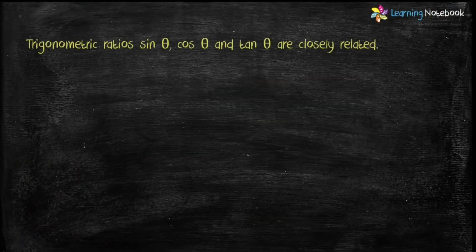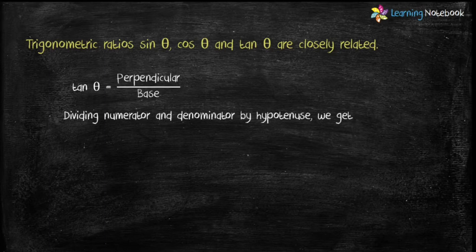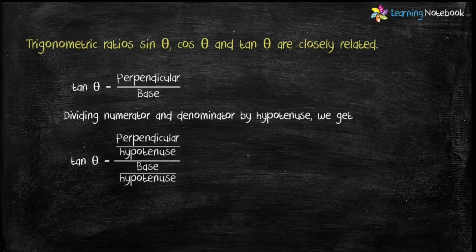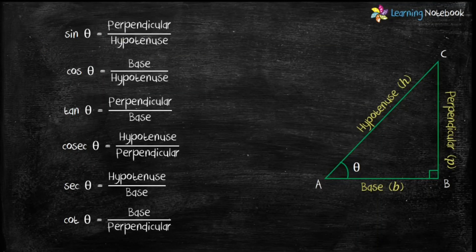Sin theta, cos theta, and tan theta are closely related. If we know any one of them, we can easily find the other two ratios. Tan theta equals perpendicular upon base. Dividing numerator and denominator by hypotenuse, we get tan theta equals perpendicular by hypotenuse upon base by hypotenuse. But perpendicular upon hypotenuse equals sin theta, and base upon hypotenuse equals cos theta. Therefore, tan theta equals sin theta upon cos theta.